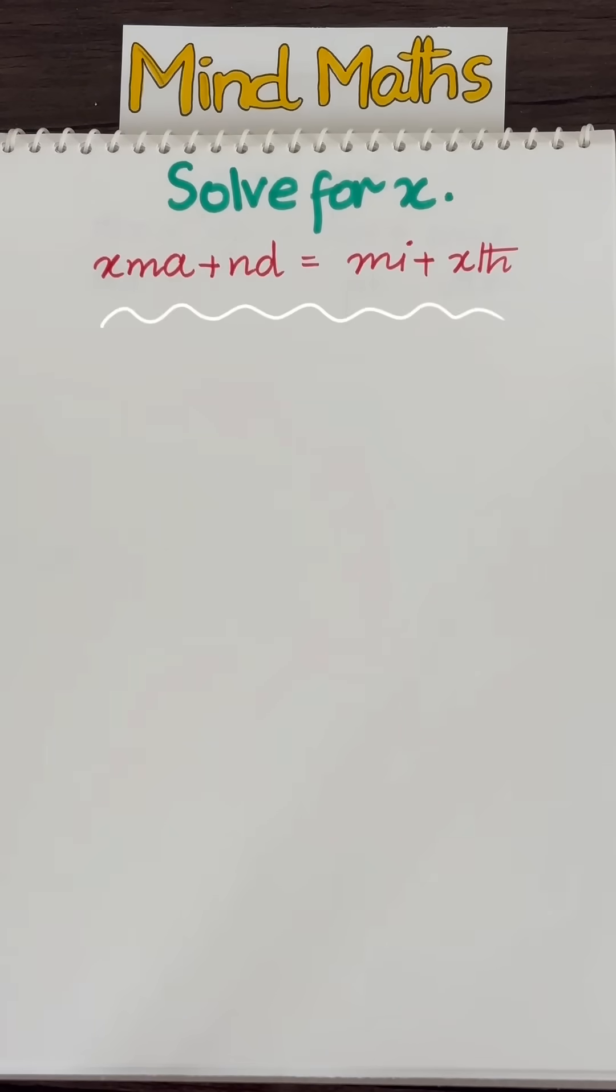It says solve for X, and it gives us XMA plus ND equals MI plus XTH. If you want to try it on your own...